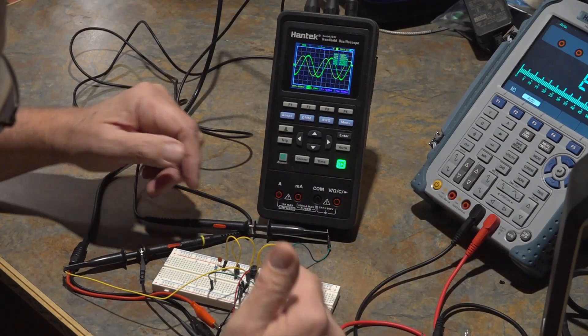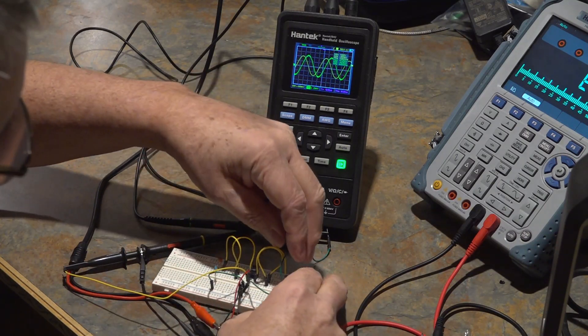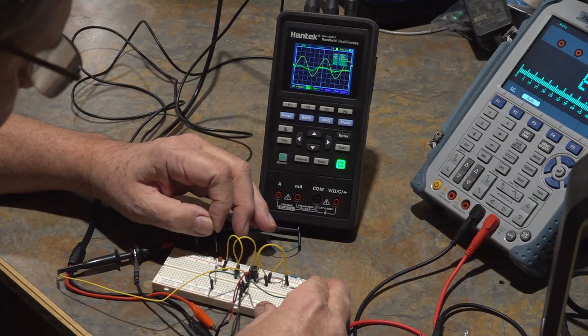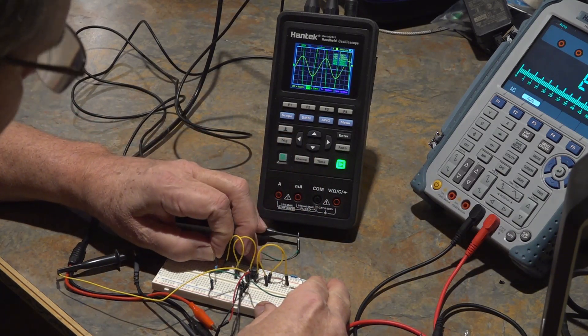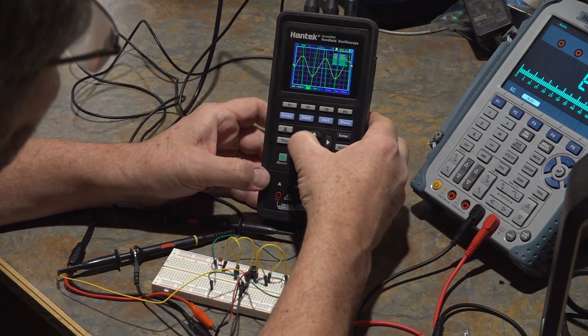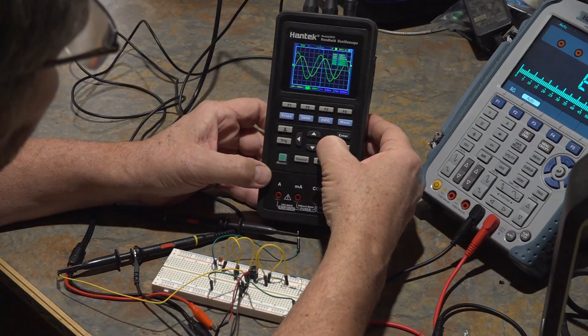I don't believe these Hanteks do the math for you, but there's the thing. Now we'll slide it over to the capacitance side. We take off the channel two or the green trace and put it over by the capacitance.